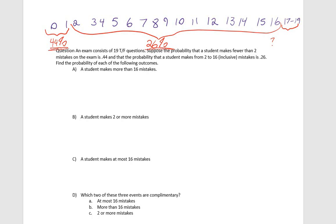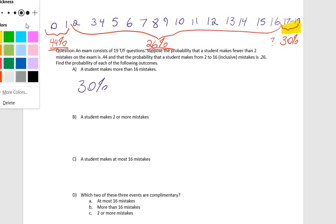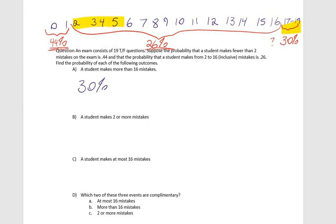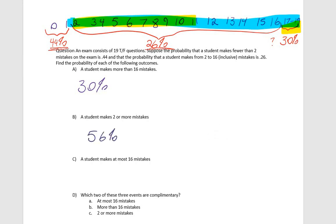Students will make between zero and 19 mistakes, so all probabilities need to add up to 100%. Forty-four plus 26 gives us 70%, leaving 30% for making more than 16 mistakes. The probability a student makes more than 16 mistakes is 30%. The probability a student makes two or more mistakes covers those ranges, giving us 26 plus 30, which is 56%.